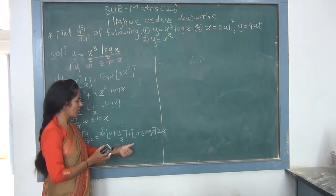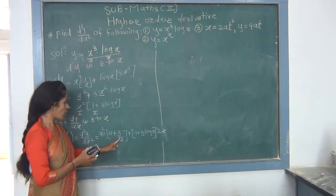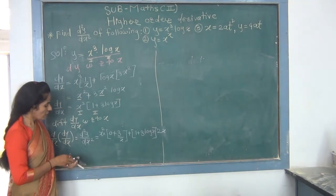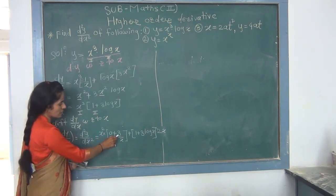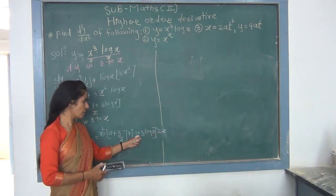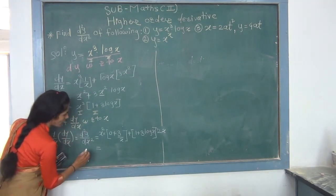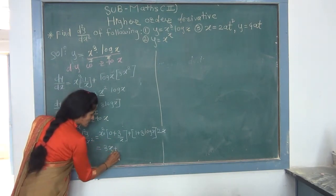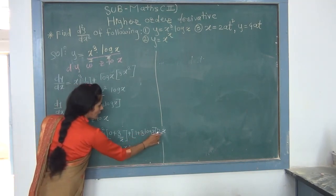Now differentiate log(y) = x·log(x) with respect to x. The left-hand side, log(y), is a composite function, so its derivative is (1/y)·(dy/dx). On the right-hand side, x and log(x) are in multiplication, so we apply the product rule: first function x as it is, times derivative of log(x) which is 1/x, plus log(x) as it is, times derivative of x which is 1.